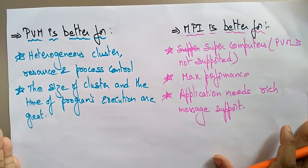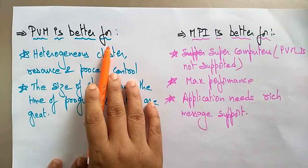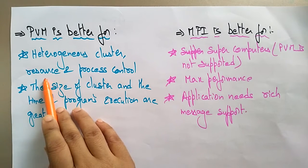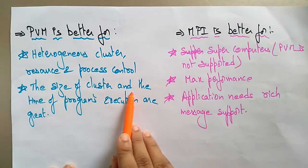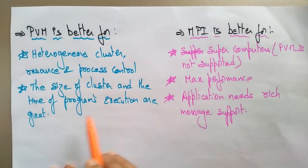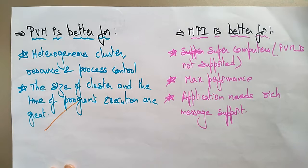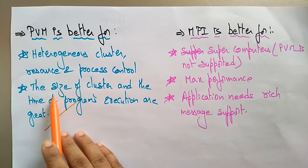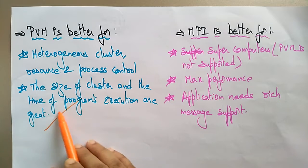PVM is better for heterogeneous clusters, resource and process control. The size of the cluster and the time of program execution can be large in PVM — this is a key point to remember.